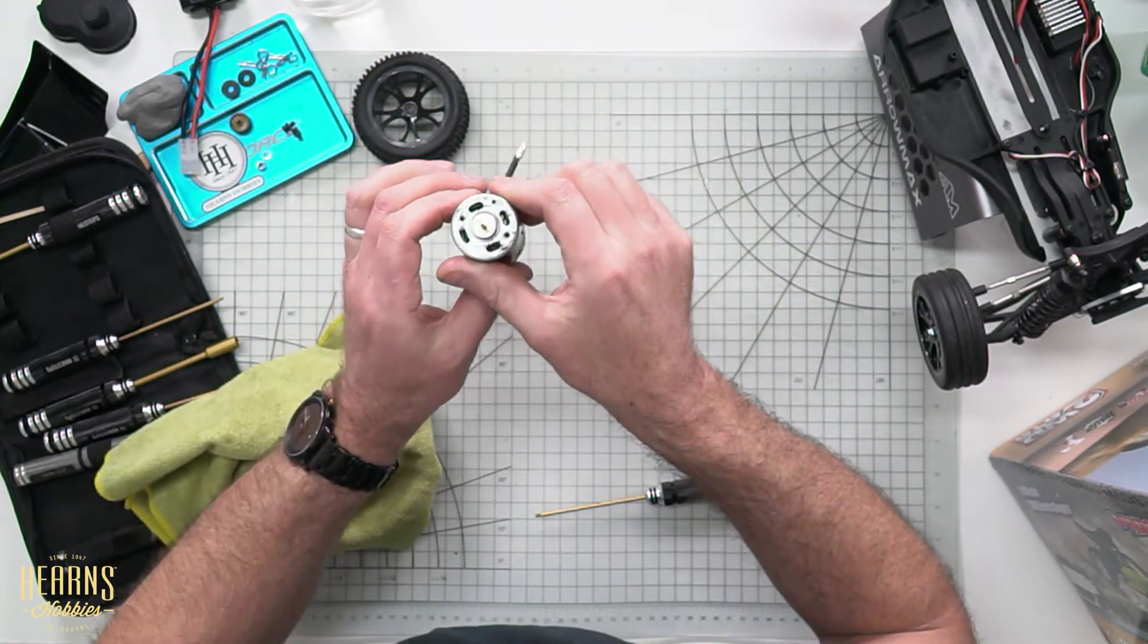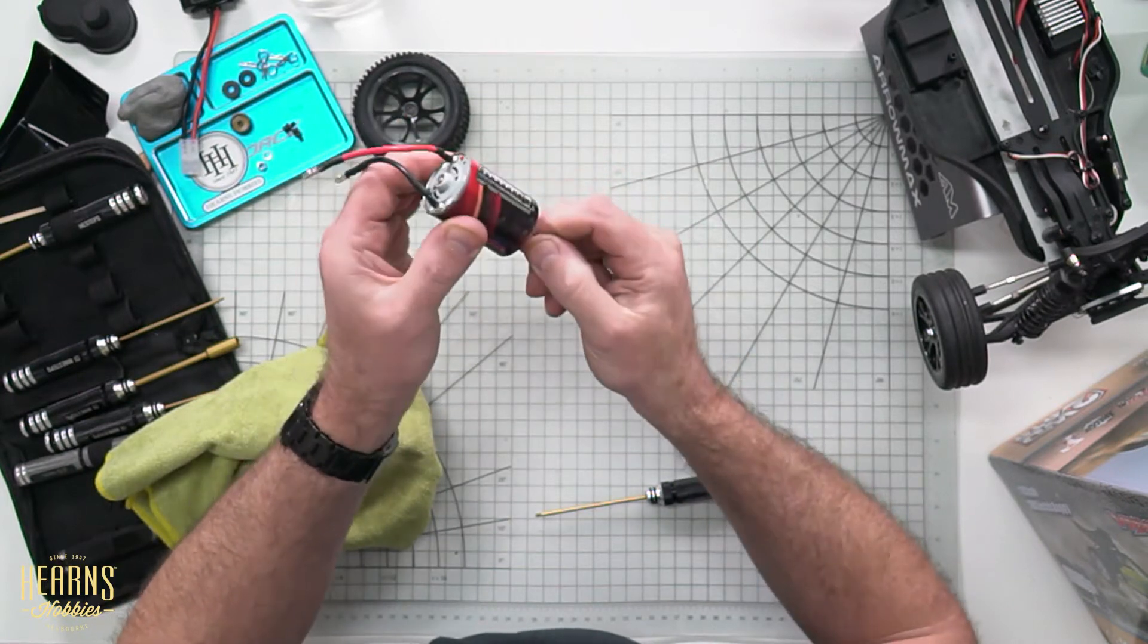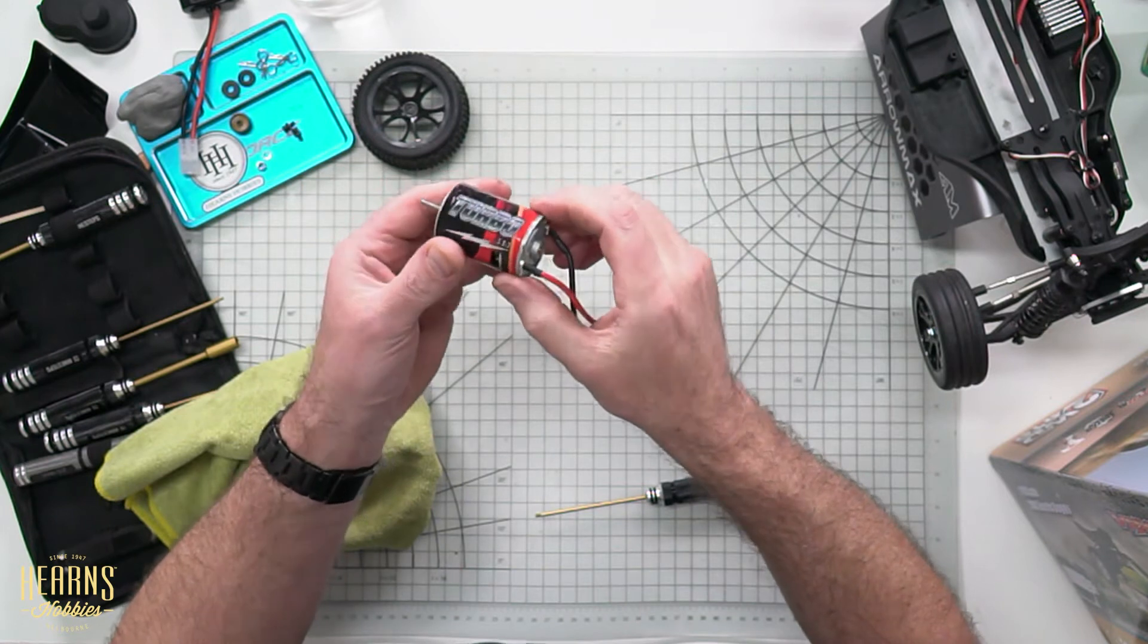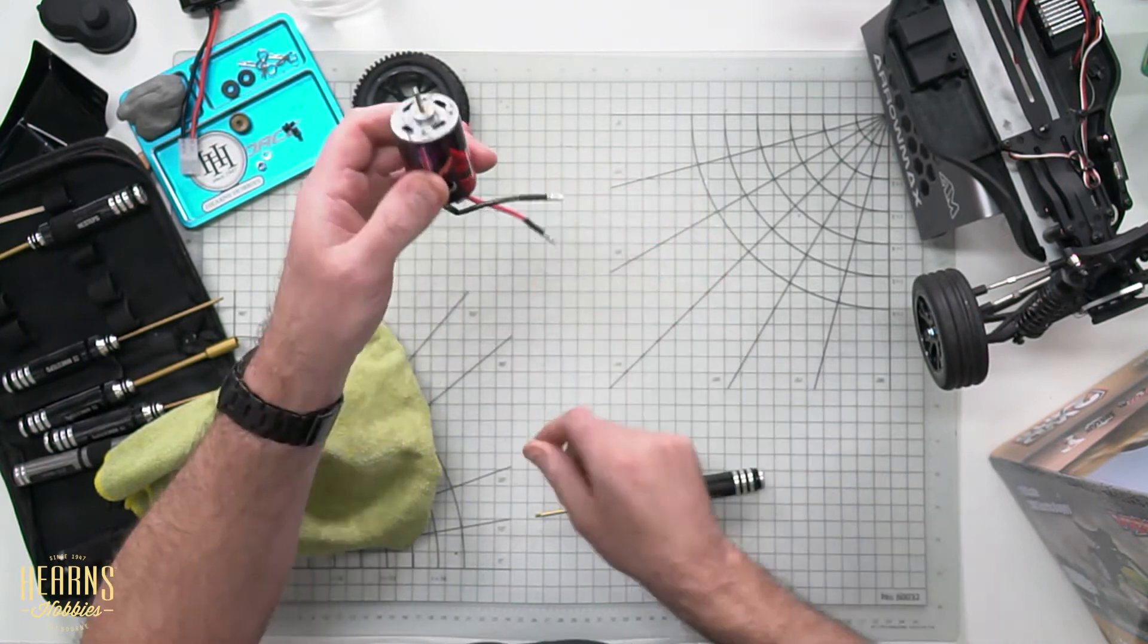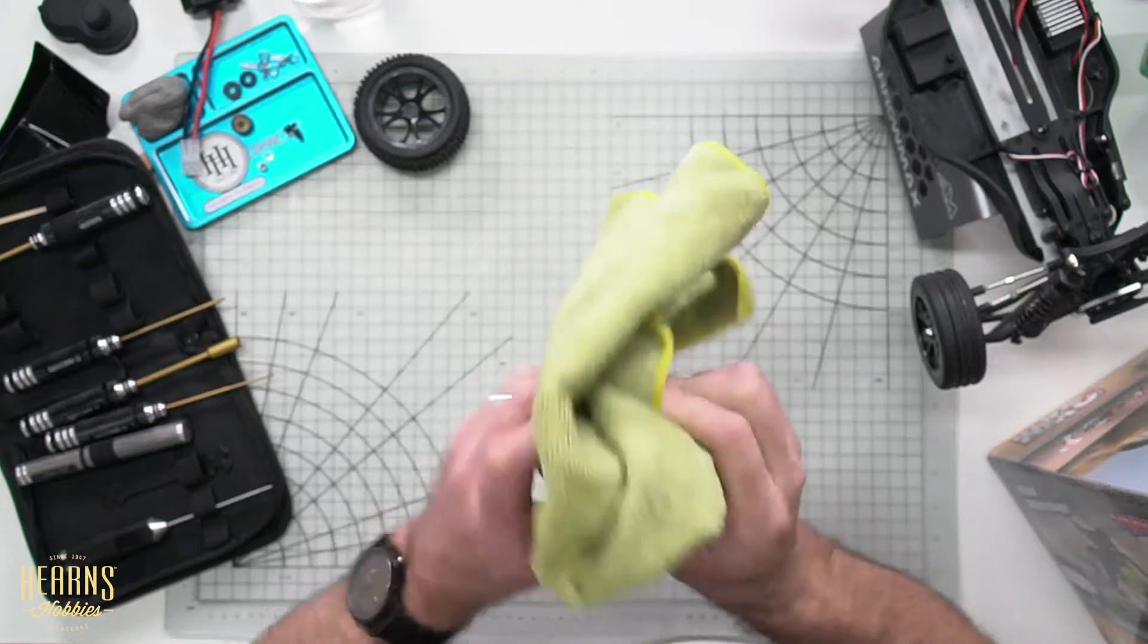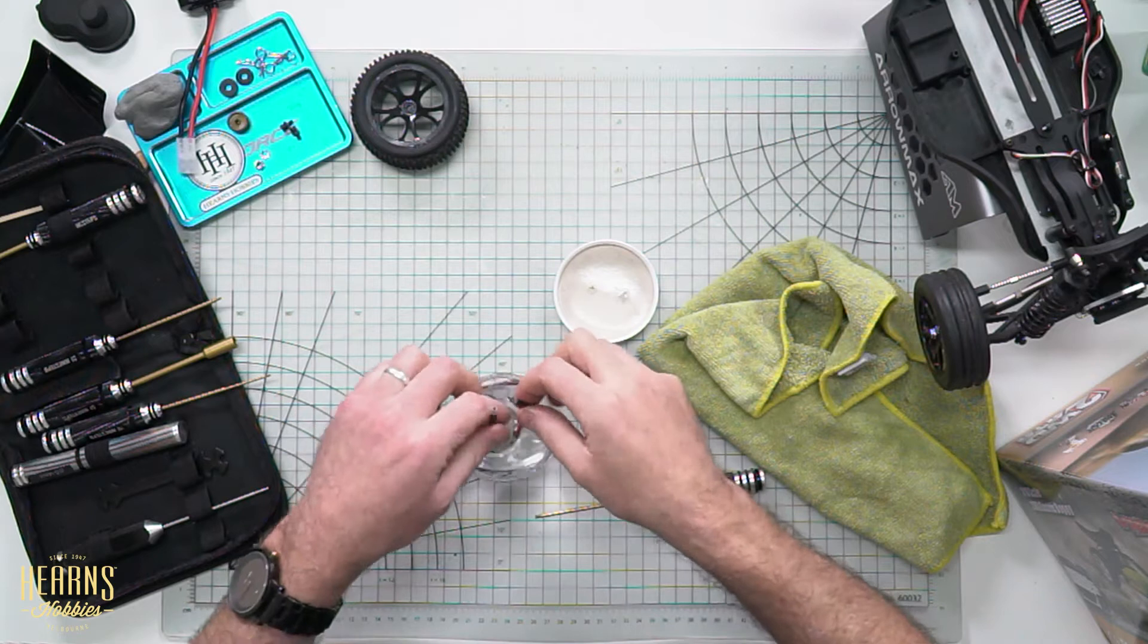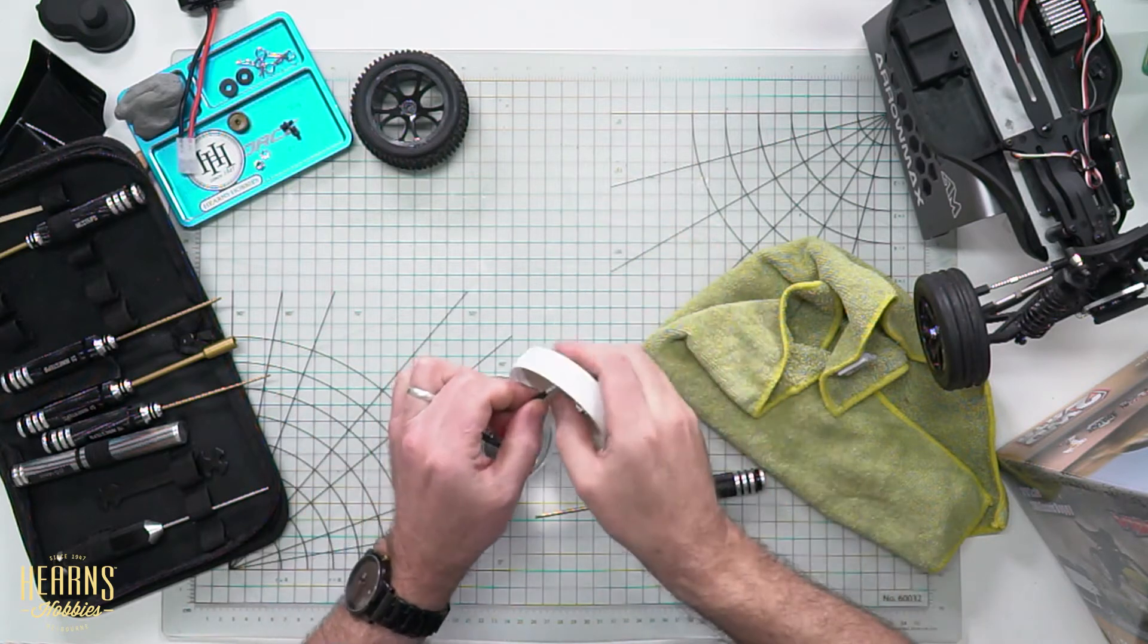So this is what we have - a very simple sealed 540, commonly referred to as a Mabuchi. It's like calling a pen a biro. I'm going to go ahead and show you how I do it. I've got a nice jar here of clean water.